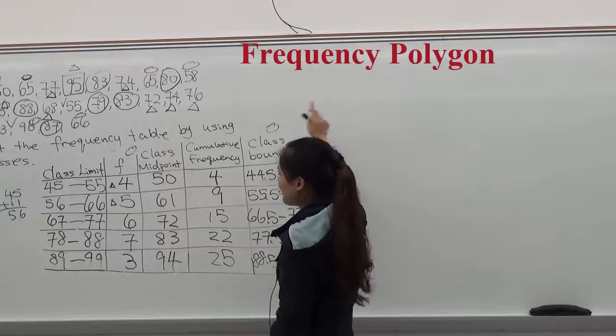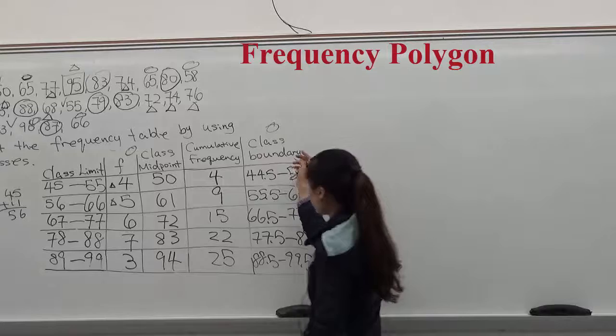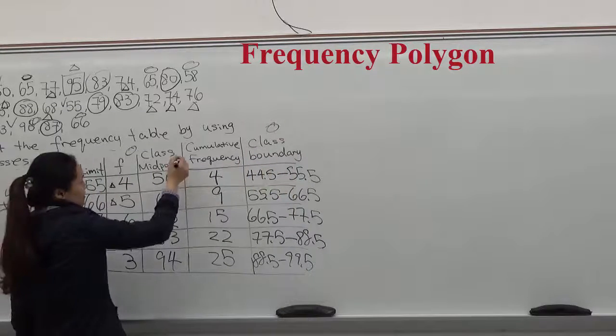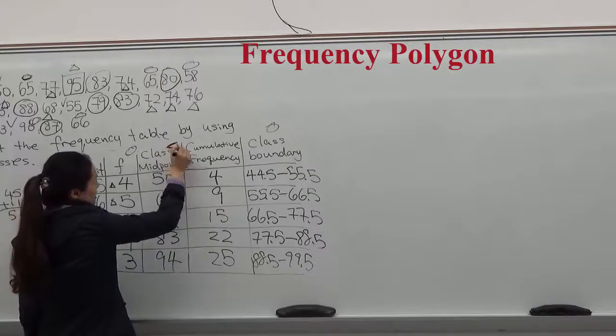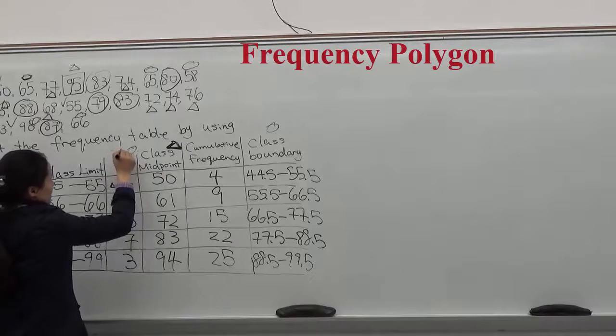Let's start to construct frequency polygon. Use the table we have. We only need to use two of the columns. We will have to use the class midpoint column and the frequency column.